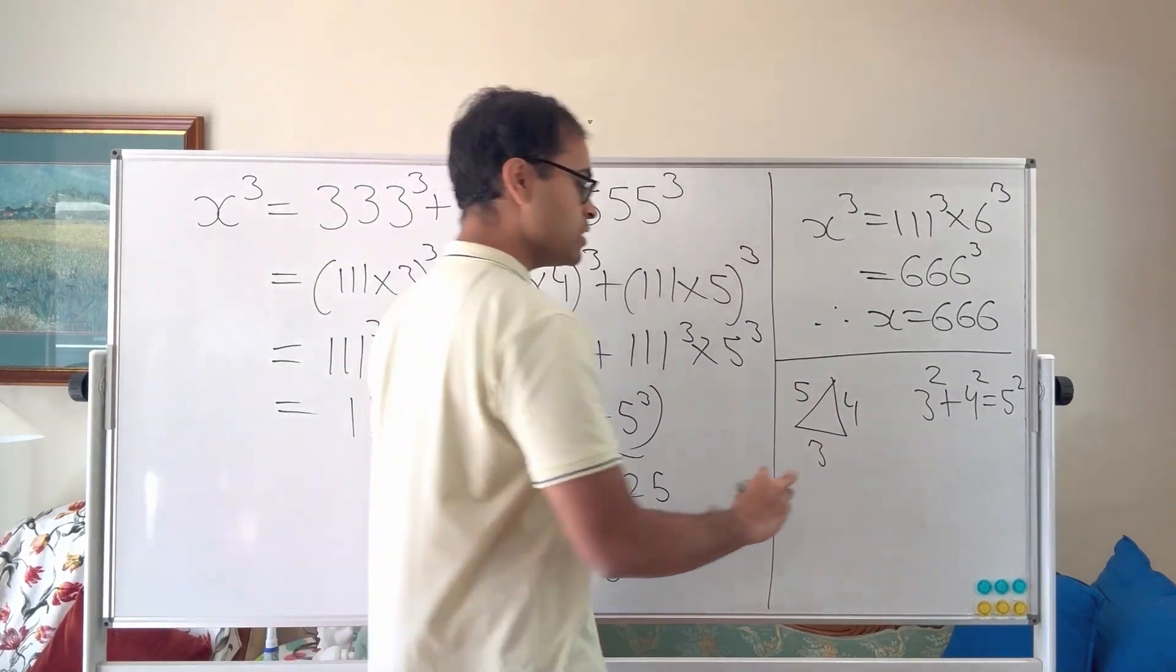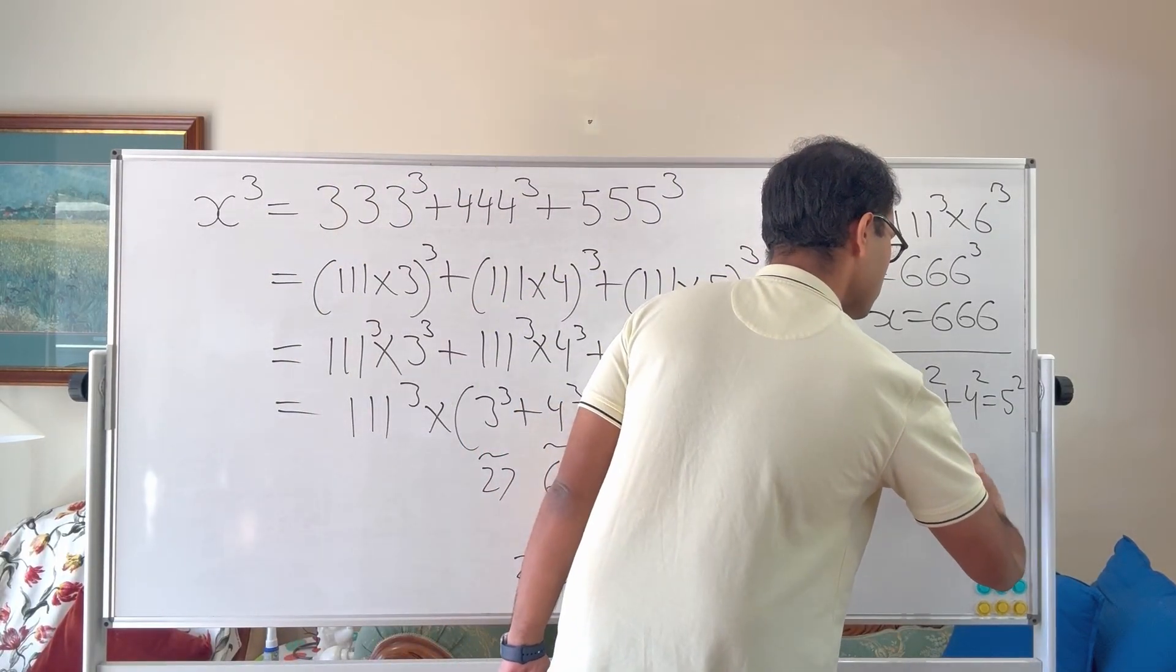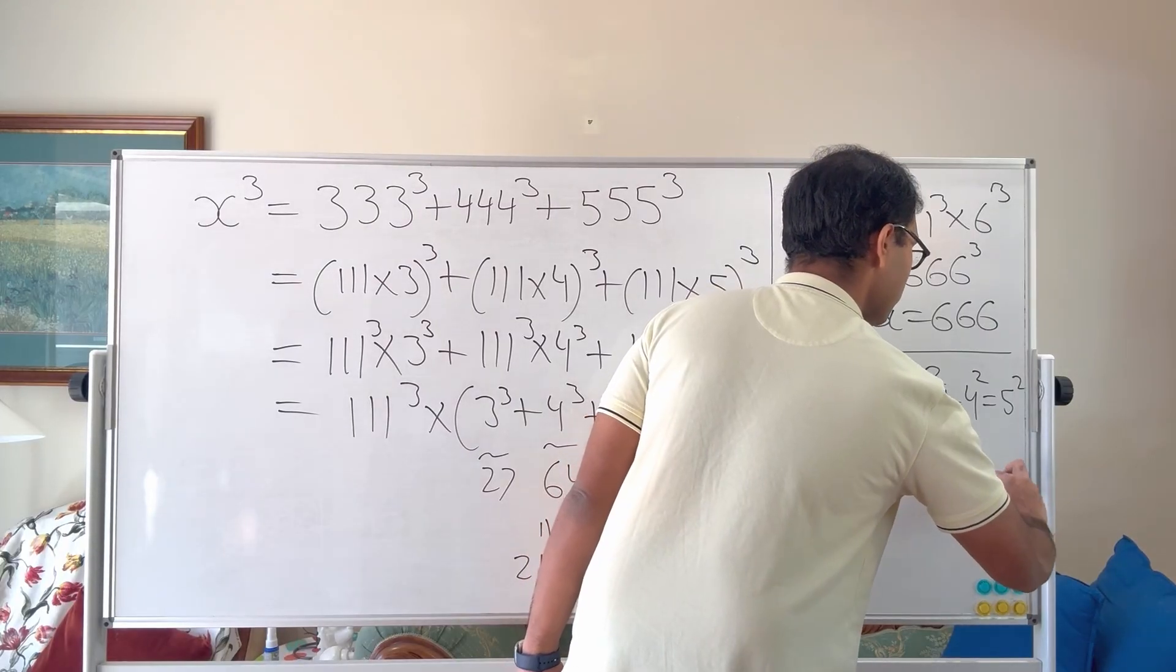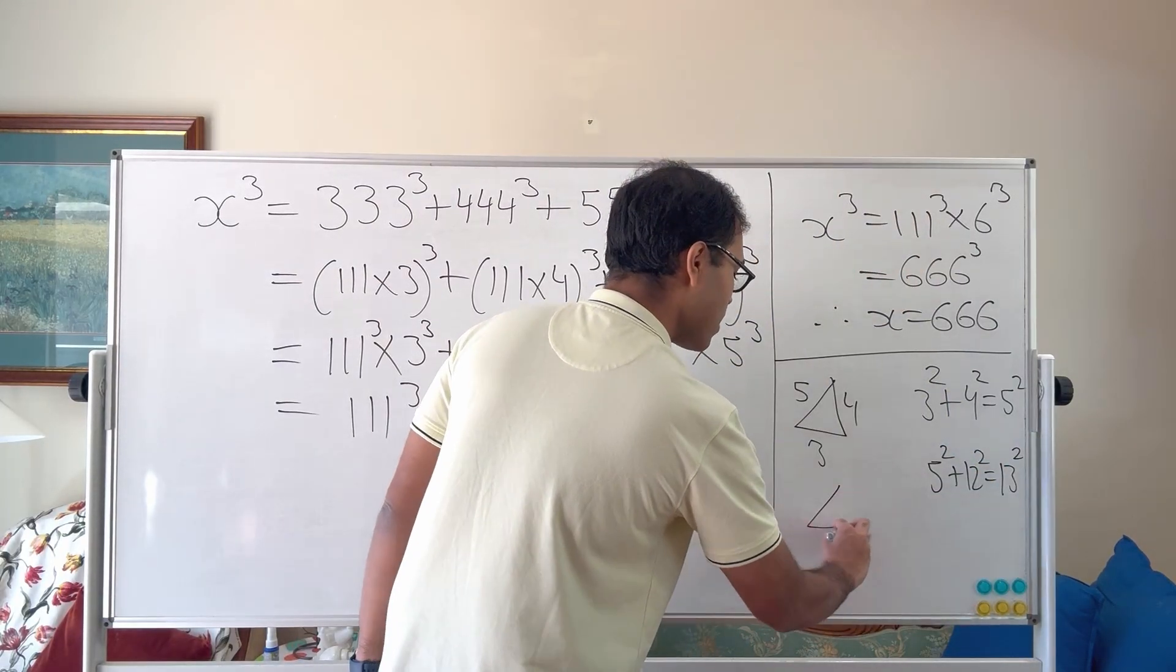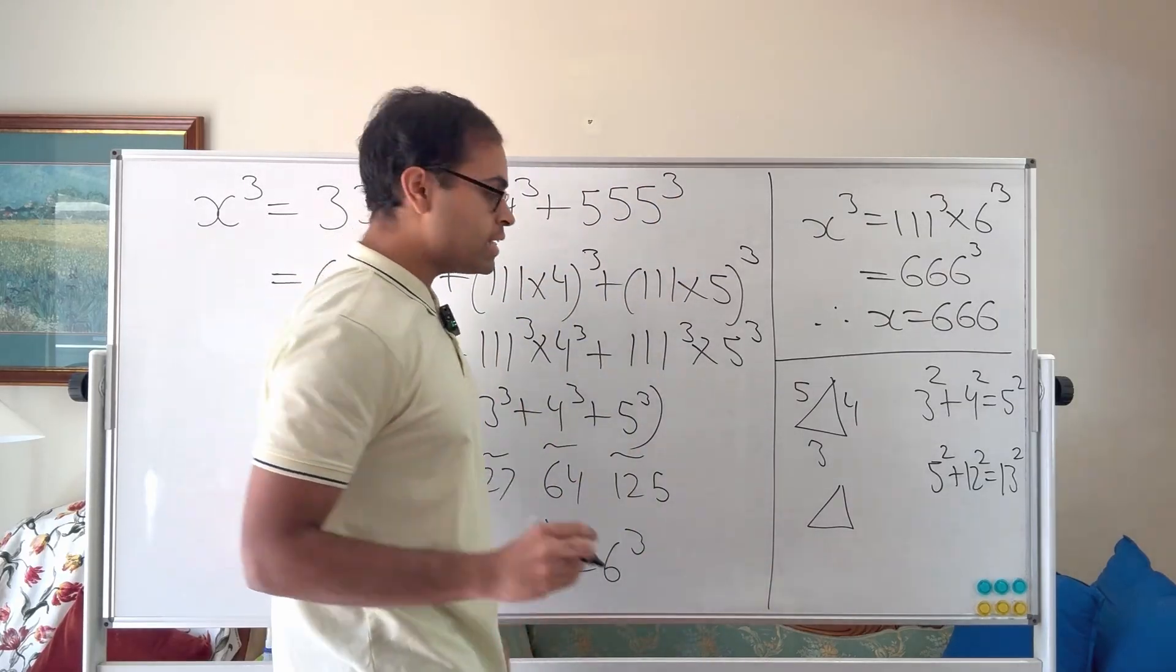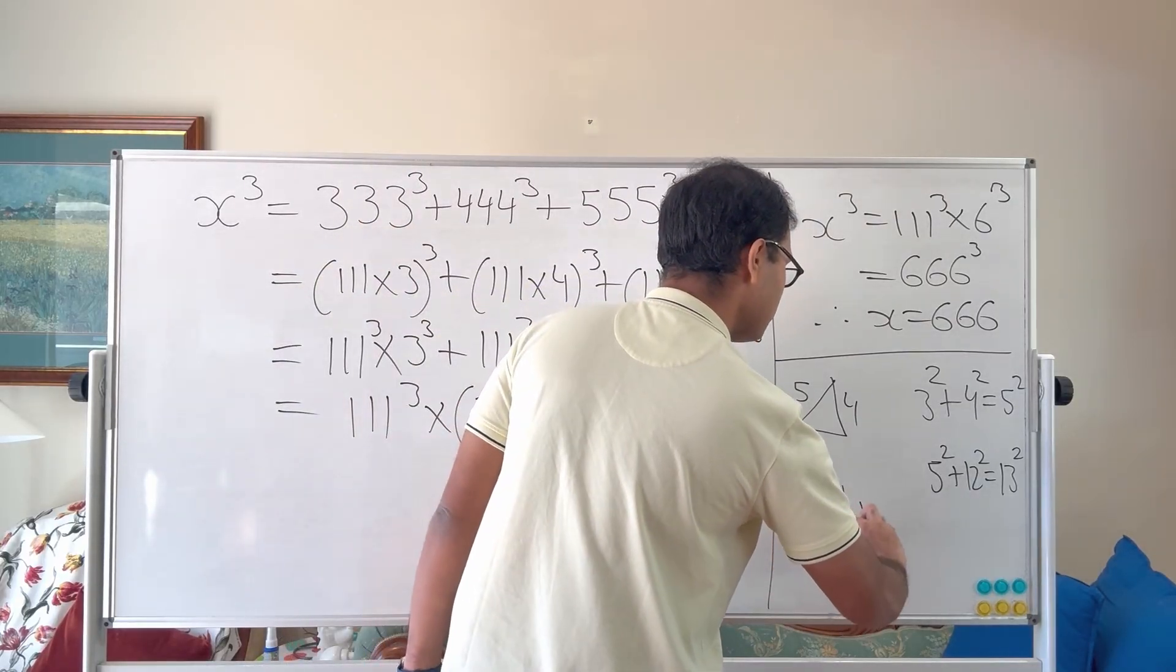And you can also find others. For example, you've got 5 squared which is 25 plus 12 squared which is 144 is equal to 169 which is 13 squared. So you've got a right triangle with whole number side lengths that have side lengths 5, 12, and 13.